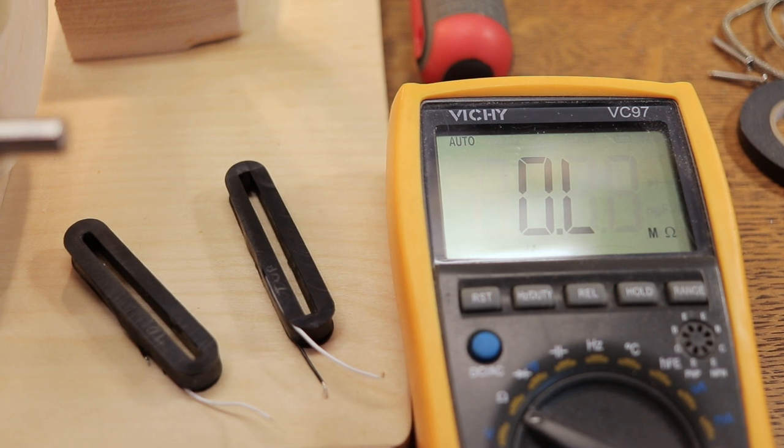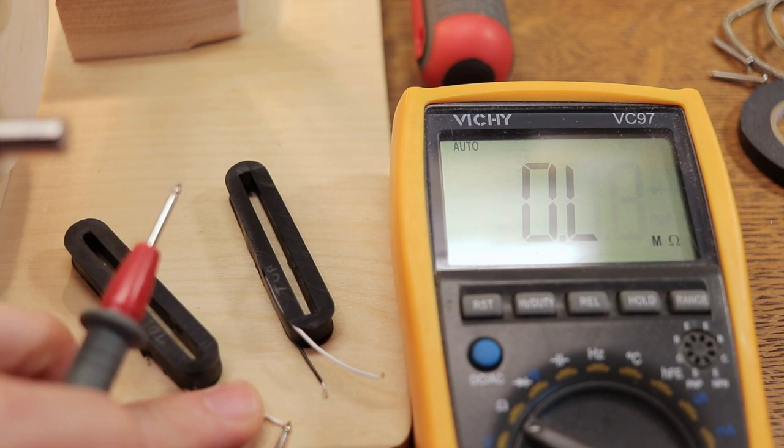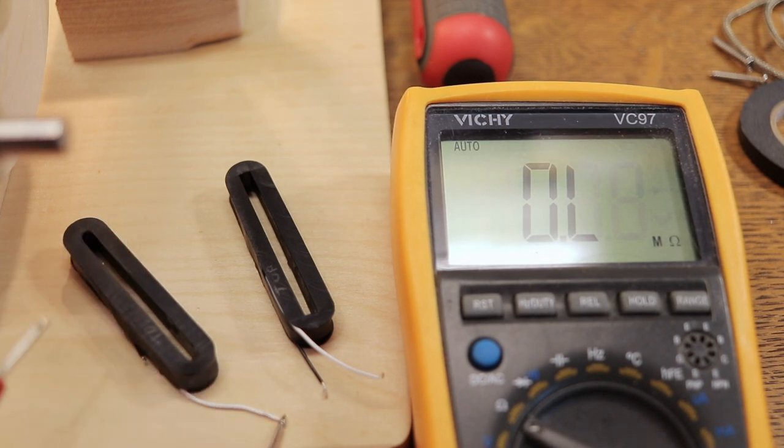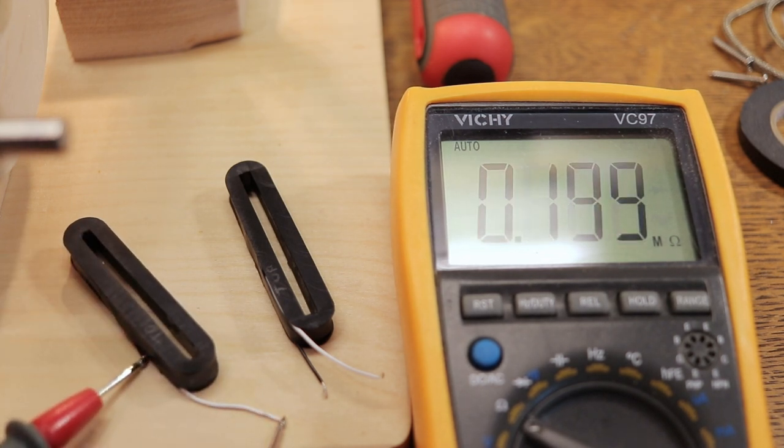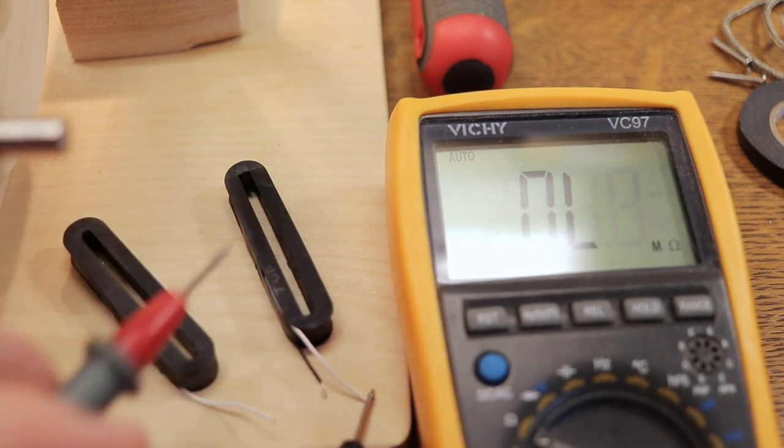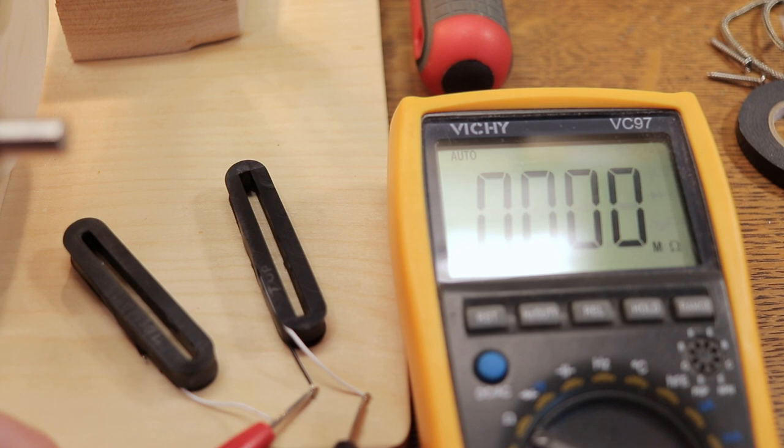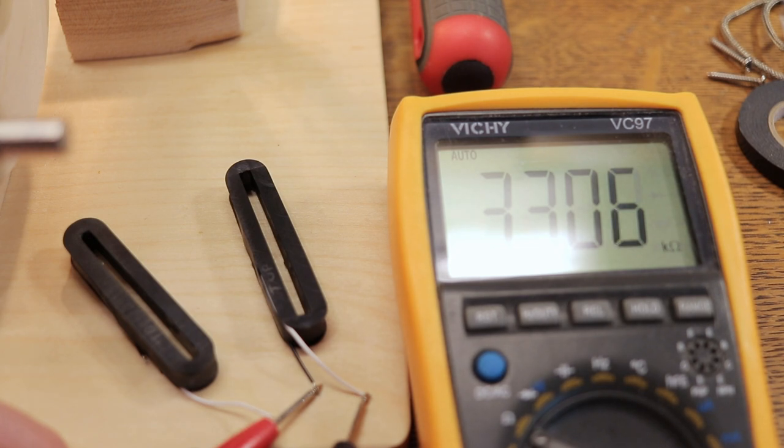I just had to do the same thing again for the second pickup. We can see here, all wrapped and waxed and potted. This one reads 3.318 kilo ohms, and this one is 3.305.